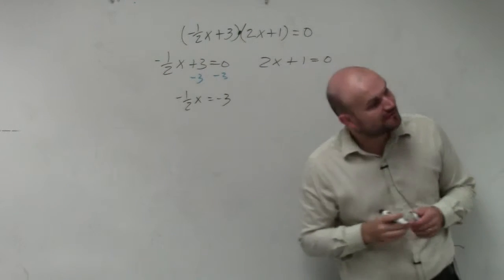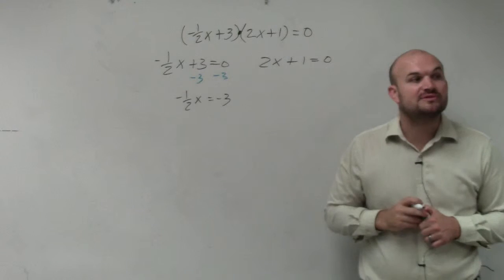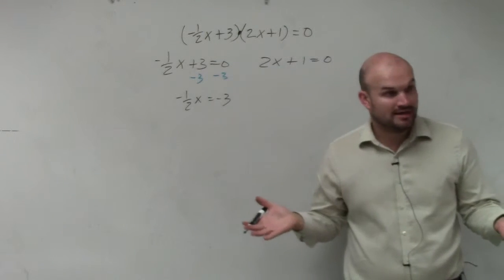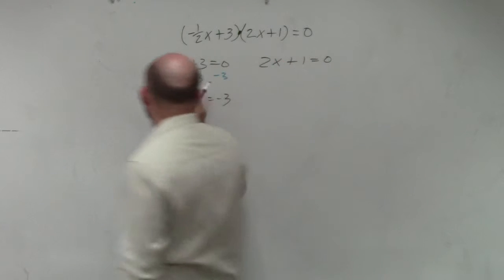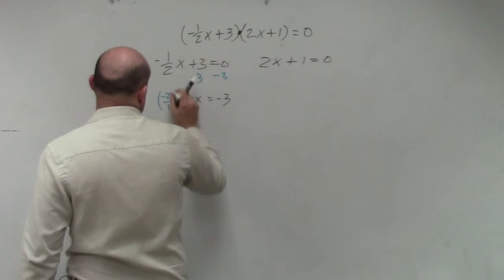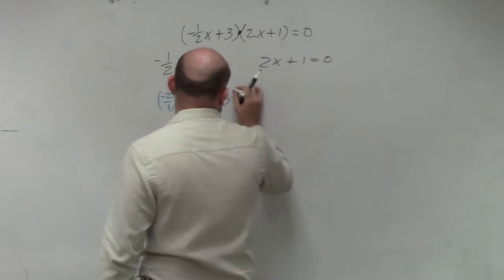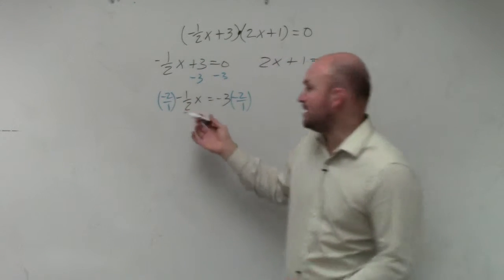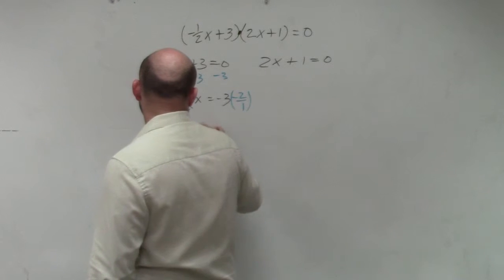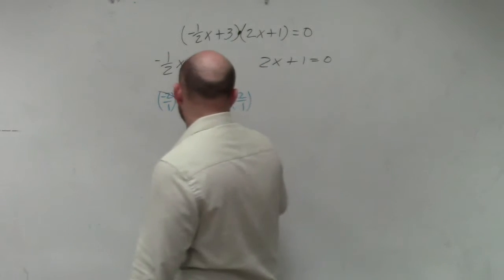If you guys remember, to get rid of a fraction, if you multiply a fraction by its reciprocal, that will take you to 1. And if you just have 1 times x, that's really just left with x. So I'll multiply by the reciprocal, negative 2 over 1. Any number multiplied by its reciprocal goes to 1. So that's really 1 times x, which is just x.